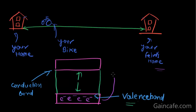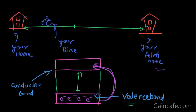Electrons want to travel from the valence band to the conduction band. For the conduction of current, it is necessary for electrons to travel from the valence band to the conduction band. Just like if you want to deliver something to your friend's home, you have to go there. If you don't have enough fuel, you can't deliver anything.